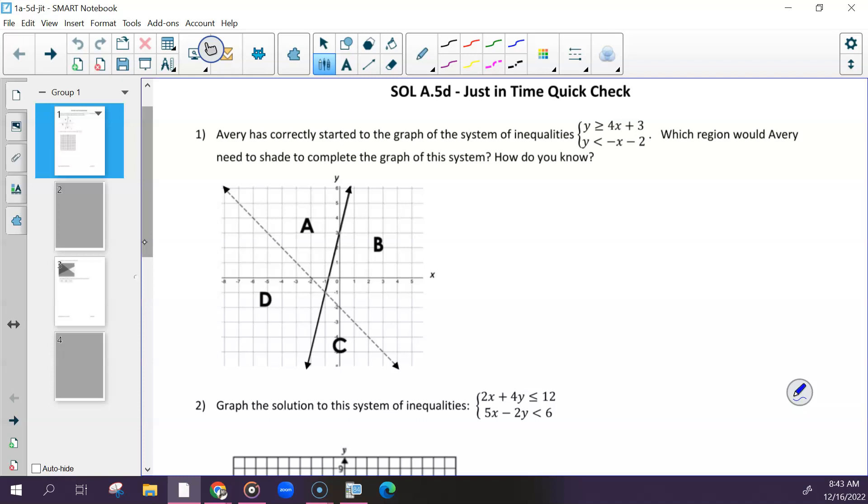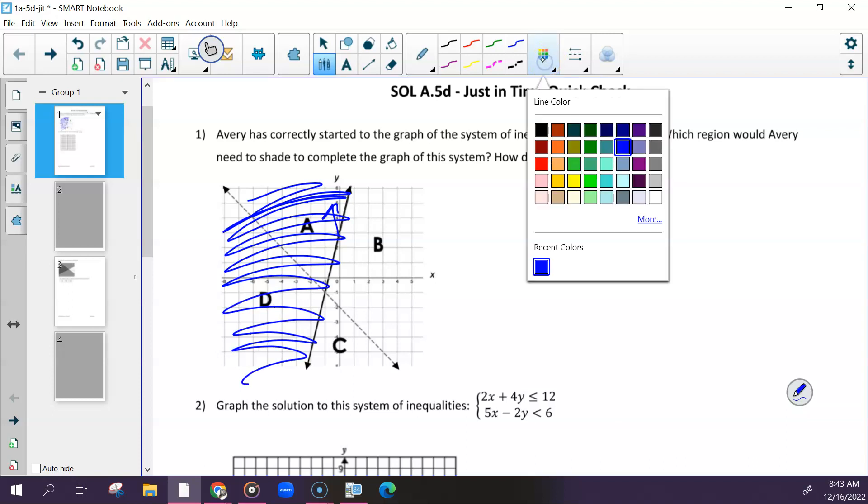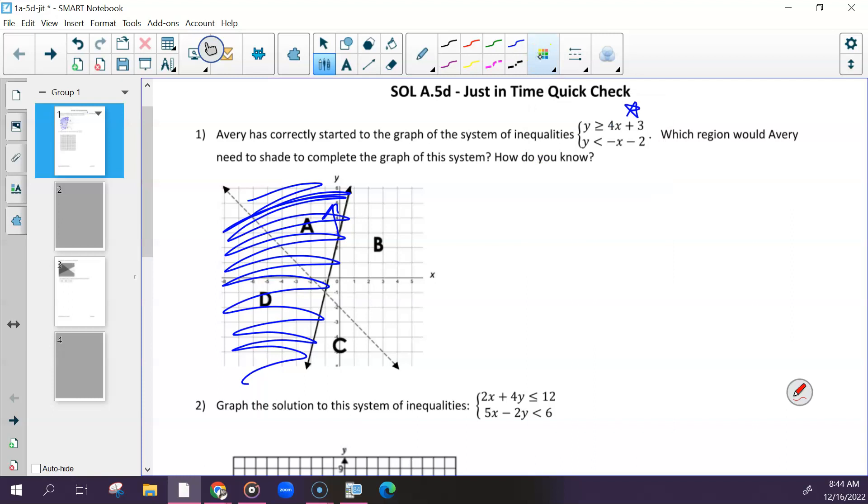So I'm going to just graph them on here. So this one starts at 3, has a slope of 4, which I'm assuming it's this line. Is it solid? It's shaded above. And then the other one is this line, shaded below. So where they overlapped should have been B.